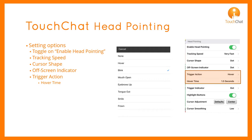If you select hover, a secondary menu will open that allows you to set the time one must hover over the desired button to activate it. Settings range from 0.5 seconds to 5 seconds.